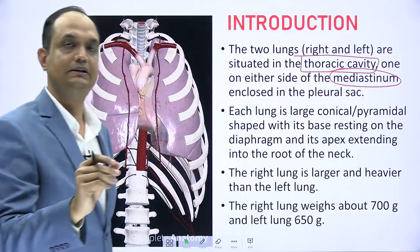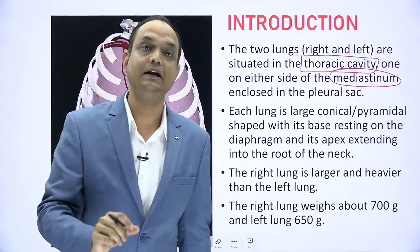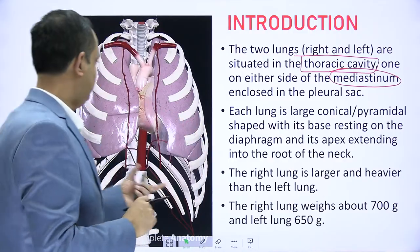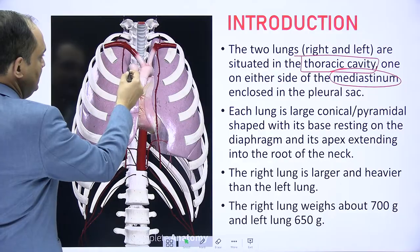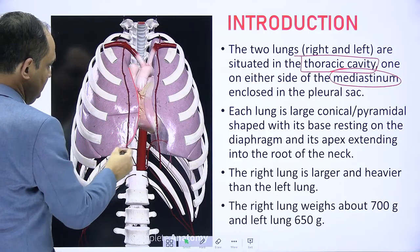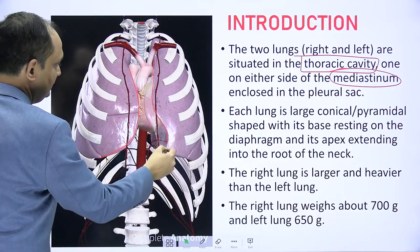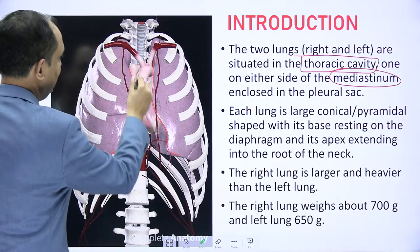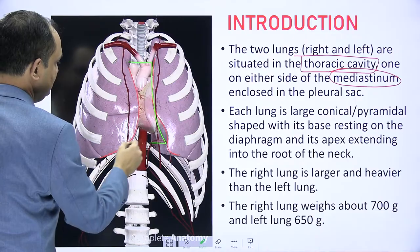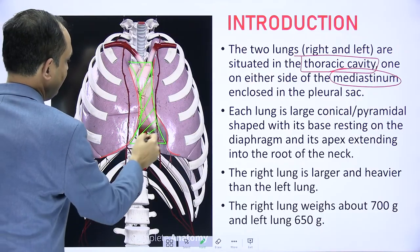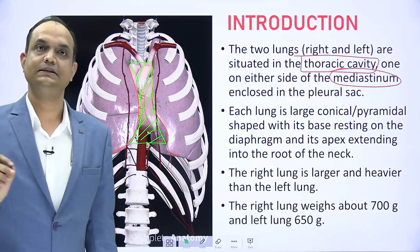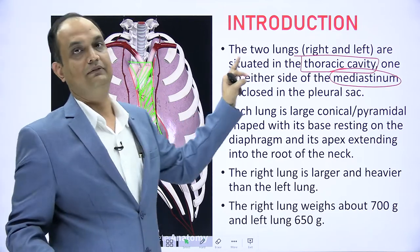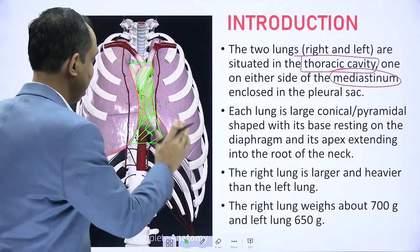The term mediastinum means the space present in the midline of the chest cavity between the two lungs. In this diagram you can see the border of one lung and the border of the other lung; in between them there is a space known as mediastinum. So mediastinum is the space between the two lungs.